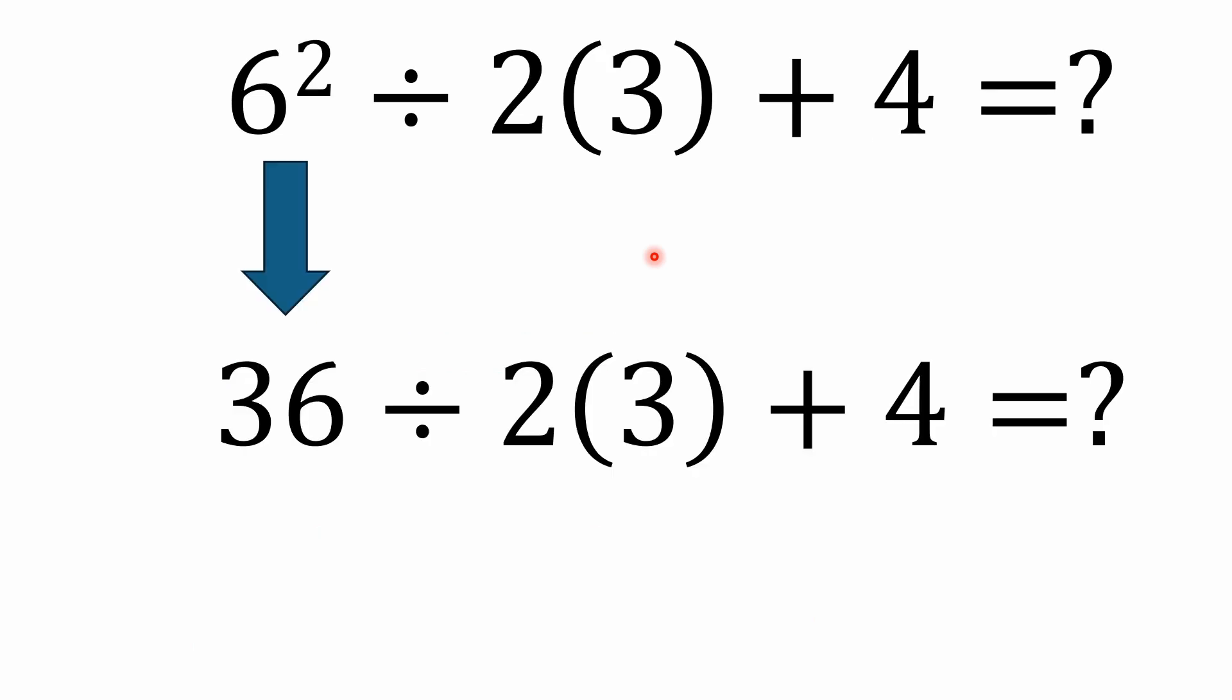So the first step here is to deal with our parentheses. Now, the parentheses part is simple. It's already simplified. It's 3. So we really don't even have to deal with that. It's already there. It's simplified. If we had some other expression inside there, if that was like 3 plus 2, well, we'd have to resolve that to 5 before we could move on. But in this case, we've got our parentheses handled, so we just move over to exponents.